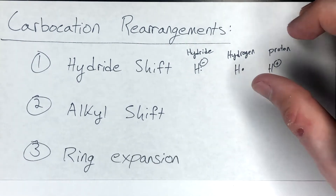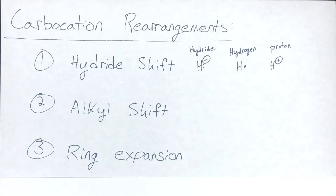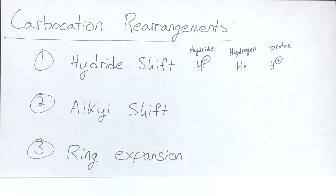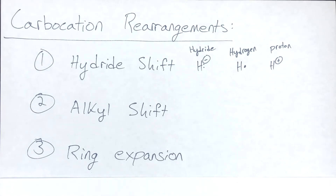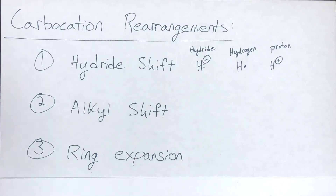The third type is ring expansion or contraction. Energetics is again what's driving this — rings will expand because larger rings are generally lower in energy. Ring expansion is just a specific case of an alkyl shift, because all that's happening is you're shifting an alkyl group that causes the ring to expand, but it looks very different especially when you're first learning it. I've put it in as a separate category just to show how it's different and somewhat similar to an alkyl shift.